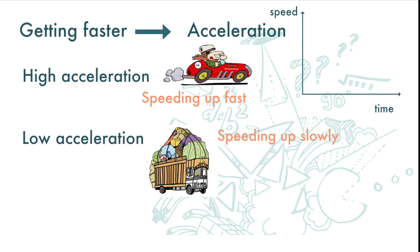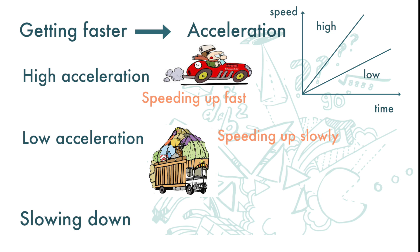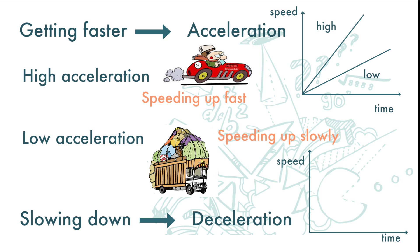In a speed-time graph, for high acceleration the graph is slanting upward steeply. For low acceleration the graph is slanting upward not so steeply. On the other hand, if the speed decreases — that is, the object is slowing down or getting slower and slower — it is called deceleration.